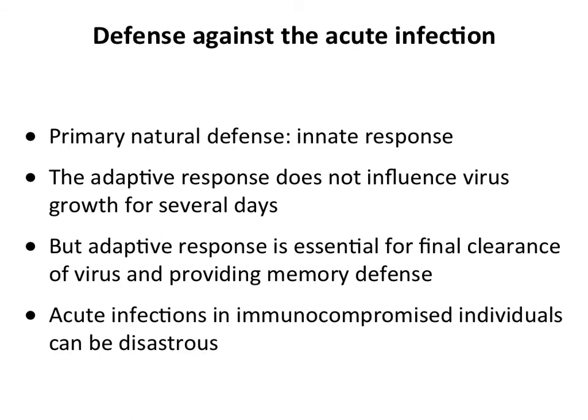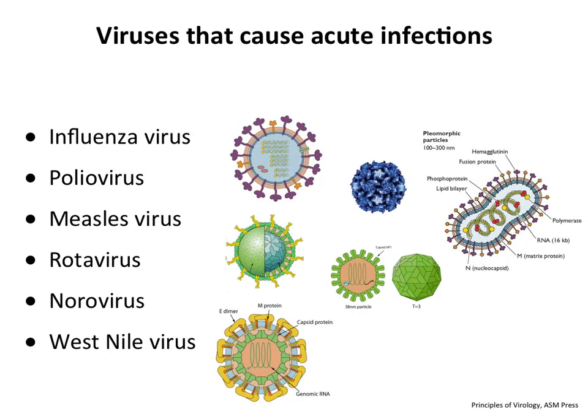When you get infected with one of these viruses, your innate response is the main controller within the first few days because adaptive responses take much longer to develop. But you do need adaptive responses to clear the infection. Without them, many acute infections will go on and on. In people without immune systems, these acute infections become persistent or lethal. For example, people without B cells who get the infectious polio vaccine can shed virus for 20 years or more. Your immune system is really important in protection.